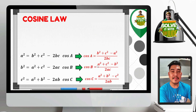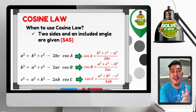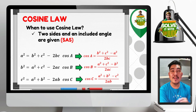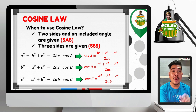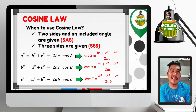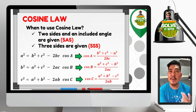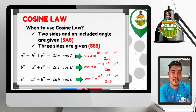When to use the cosine law? Cosine law can be used when two sides and an included angle are given — the SAS pattern — or when three sides of the oblique triangle are given, following the SSS pattern. If the given information follows either of those two patterns, we can use cosine law.